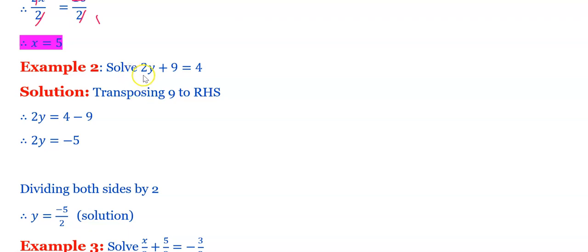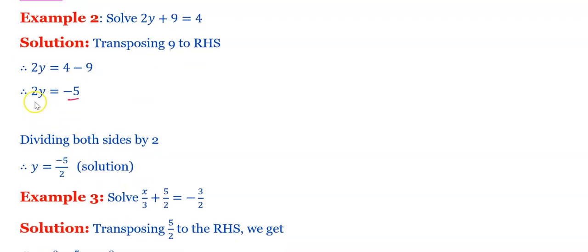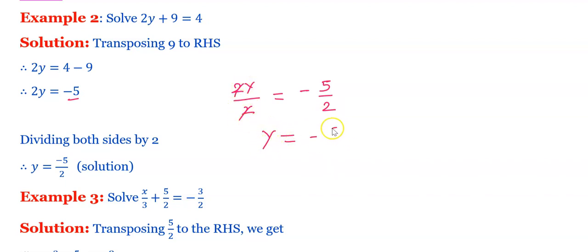Next, solve 2y plus 9 equals 4. The first step is to transpose 9 to the RHS. Since 9 has a plus sign on the left, it becomes minus on the right. So 2y equals 4 minus 9, which gives 2y equals minus 5. Dividing both sides by 2, we get y equals minus 5 upon 2. This is the solution.